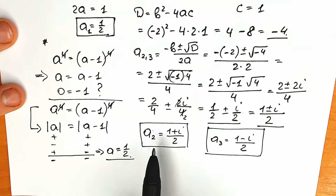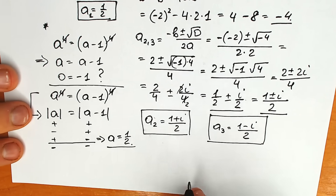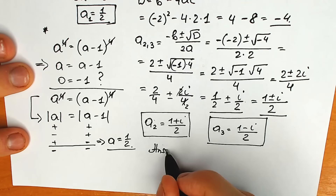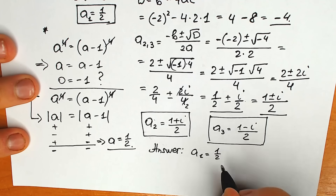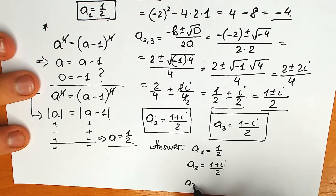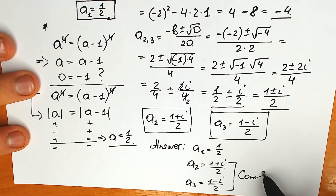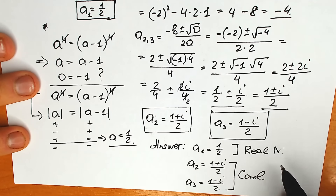So our final answer: a₁ = 1/2 (real number root), a₂ = (1 + i) / 2, and a₃ = (1 − i) / 2 — these last two are complex roots. This is the full, complete solution to the question.